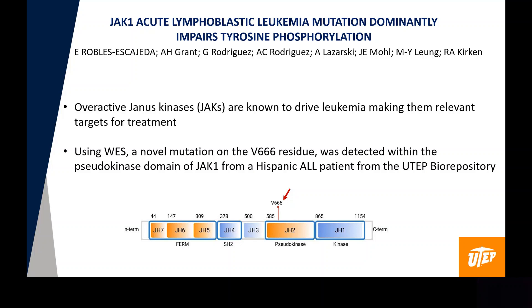My name is Elisa Robles-Escageda. I'm from the University of Texas, El Paso, and I'm going to present a project entitled JAK1 Acute Lymphoblastic Leukemia Mutation, Dominantly Impaired Tyrosine Phosphorylation.